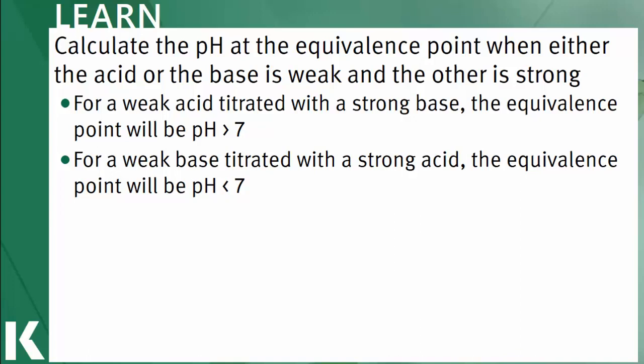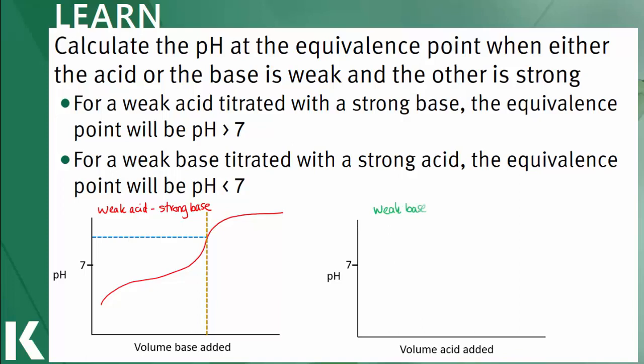You can see the difference in pH values at the equivalence points graphically as well. If you titrate a weak acid with a strong base, the titration curve will have an equivalence point shown by the dotted gold line, and extrapolating the midpoint will show a pH at the equivalence point that is higher than 7. Similarly, for weak base strong acid titration, the titration curve's midpoint will show a pH at the equivalence point that is lower than 7.